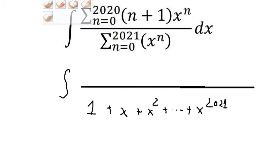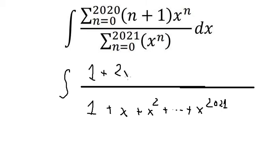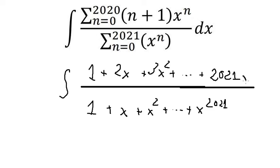Next, on the numerator we can put 1 plus 2s plus 3s squared, and so on, up to 2021 times s to the power of 2020.